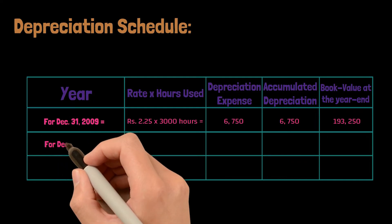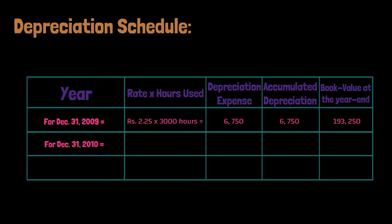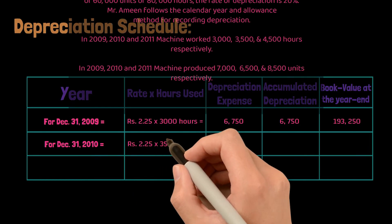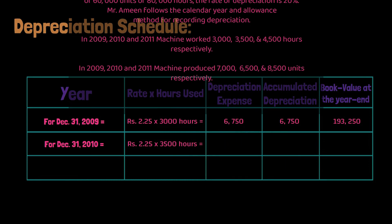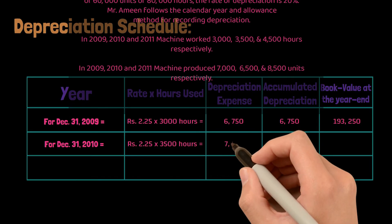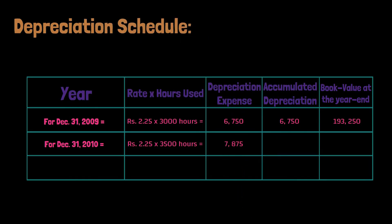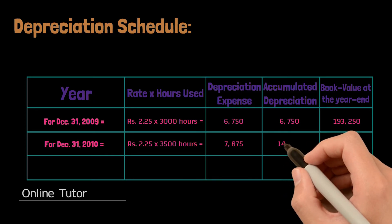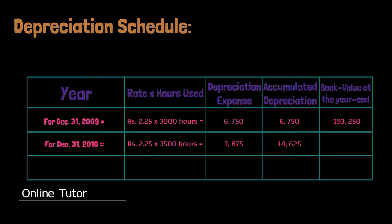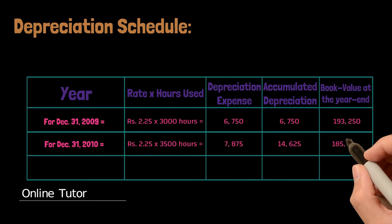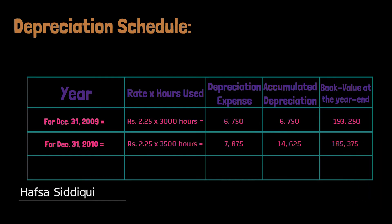For December 31st, 2010: we multiply Rs. 2.25 by 3,500 hours used in 2010, giving a depreciation expense of Rs. 7,875. Adding this to the previous year's accumulated depreciation gives a total accumulated depreciation of Rs. 14,625. Subtracting from Rs. 1,93,250, the book value becomes Rs. 1,85,375.